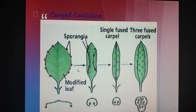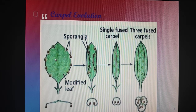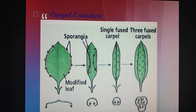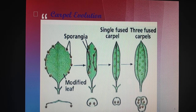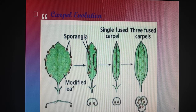We can see this diagrammatically. This is the expanded, modified leaf part, flattened in the primitive evolutionary trend. Here we can see the sporangia which are present on the edges. Not only in the primitive angiosperm — if we see the pteridophytes, many pteridophytes are like this, from which we get sporangia. In primitive angiosperms we see the flattened leaf portion with the sporangia on the edges.